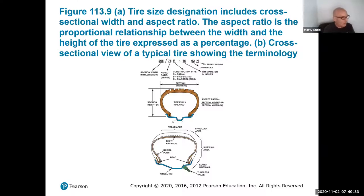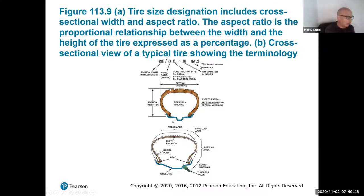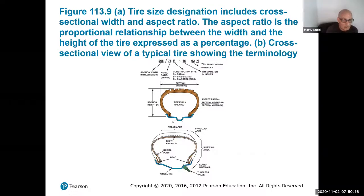Then you have the rim, the load index — how much weight will it actually take — and then the speed rating. Normally what you'll see is the 205/75R15, and that gives you a good starting point, but you need to think about the other parts too: how much can the tire actually support on the vehicle, and the speed rating. The speed rating doesn't mean you have to go at that speed; it's just saying what is possible. All bets are off if you ever have the tire repaired — if it gets a nail in it, those ratings kind of go out the window for speed and load, because the tire has actually been damaged and may not have the same ability to support as before.